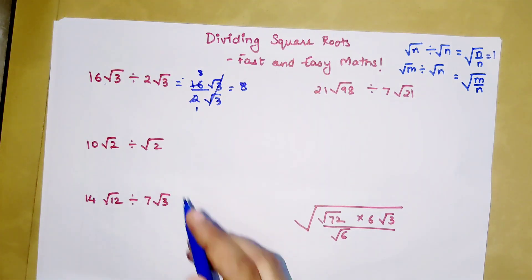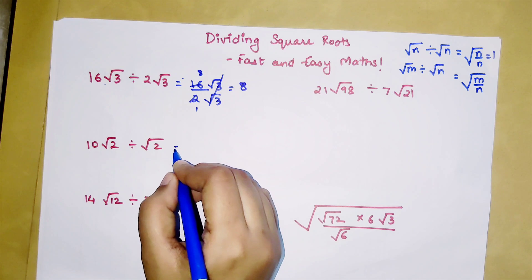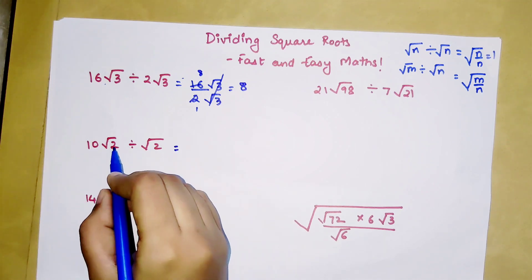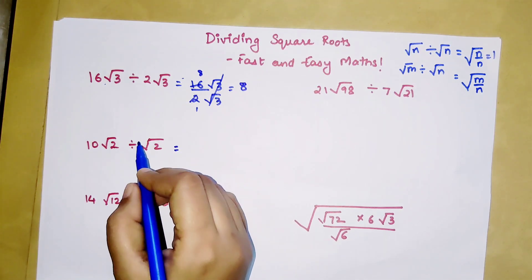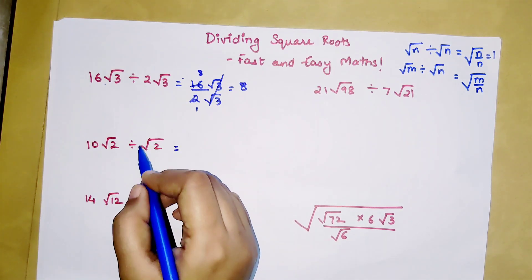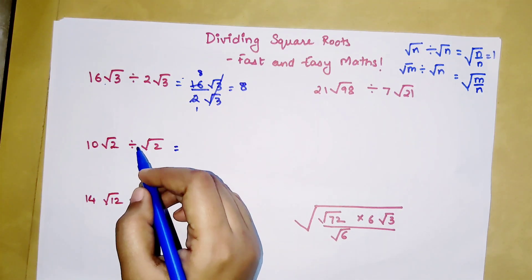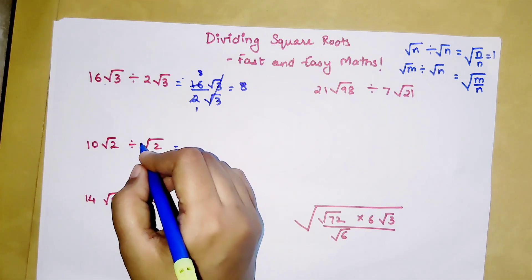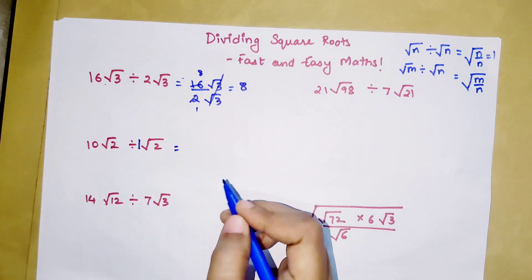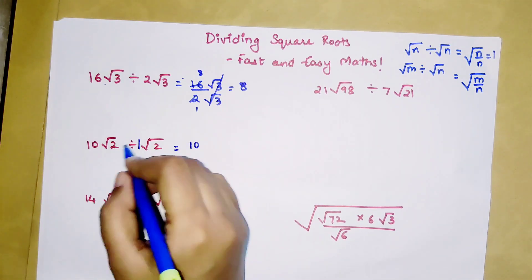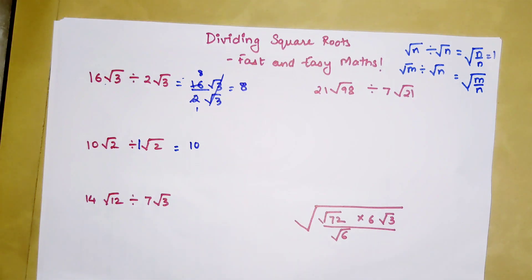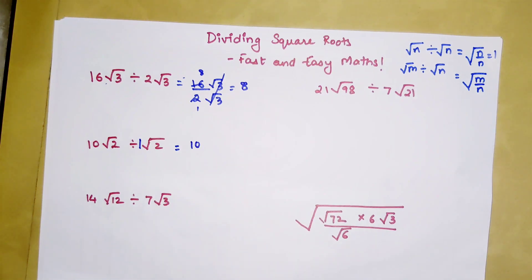Now here we have 10√2 divided by √2. If you do not have any number in front of your root you can take it as 1. So 10 divided by 1 is just 10, and √2 divided by √2 cancels out. Your answer is 10.